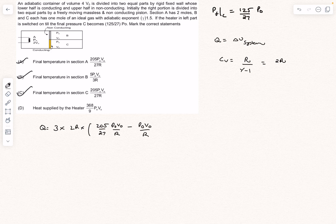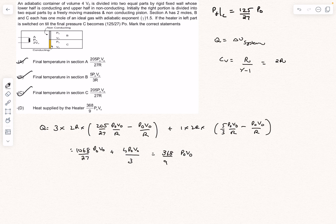For section B, it is going to be 1 into 2R times delta T. After solving, this comes out to be 368 by 9 P₀V₀, which is option D. So the answer to this question is A, B, C, D.